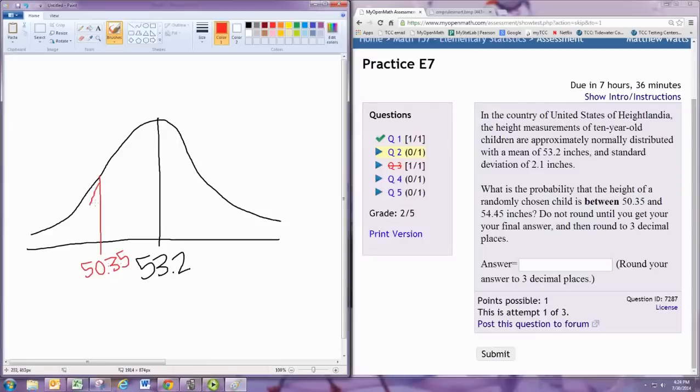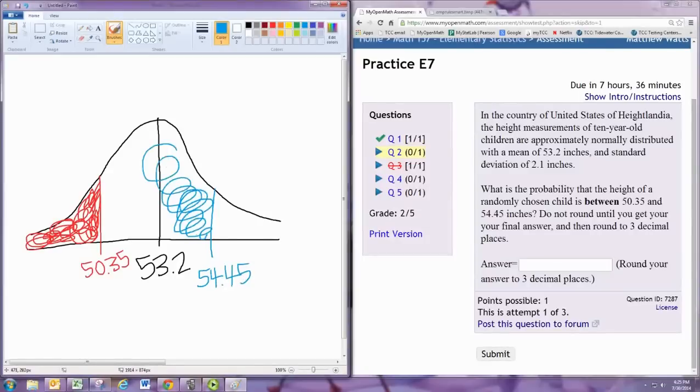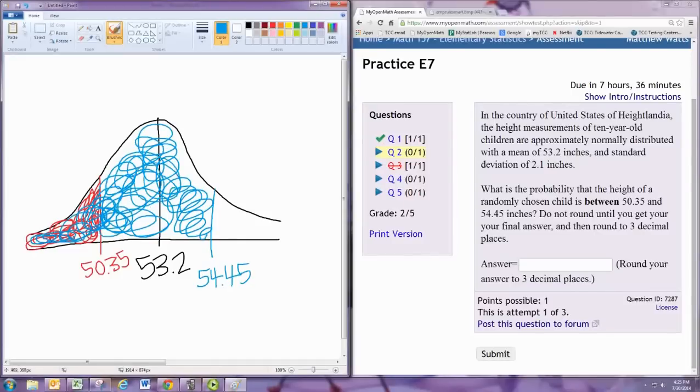You can find the probability to the left of that. And then 54.45, that's somewhere over here. You can find the probability less than that, everything less than that. What you want is the probability in the middle, just the part in the middle.